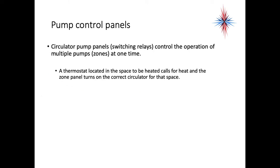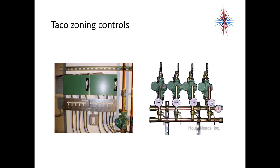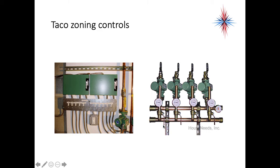Circulator pump panels, like switching relays, control the operation of multiple pumps at one time. A thermostat in each space calls for heat, and the zone panel turns on the correct circulator for that space. There are also configurations with zone valves rather than circulators. This is an example of a Taco zoning control where each switch controls one circulator. In a well-installed system, you can de-energize every single circulator individually without de-energizing the rest of the system.